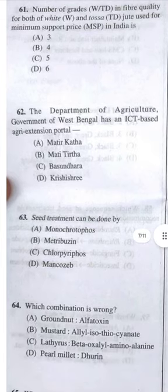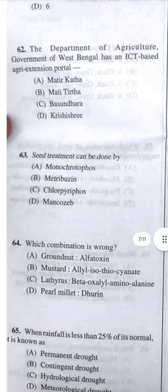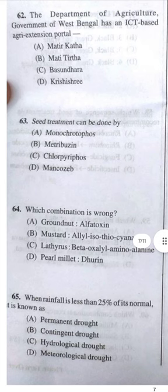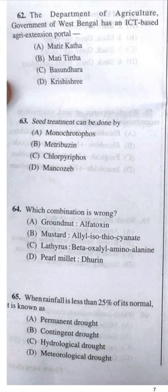Question 62: The Department of Agriculture, Government of West Bengal has an ICT-based agri extension portal — both options matir katha and matir tirtha are possible. I am choosing matir katha, but please cross-check.